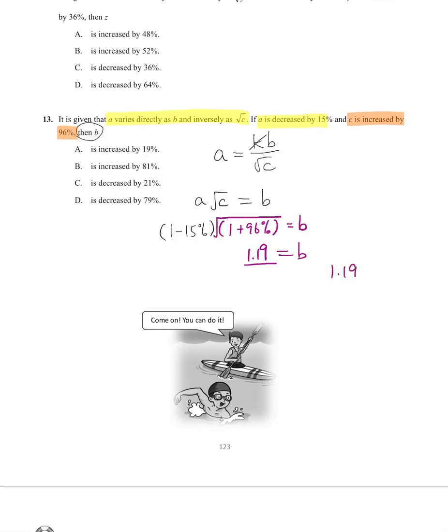And again for the percentage change you minus 1 and times by 100, so you get 19. Since the answer is positive, it's an increase, and it's 19%, so the answer is A. That's all you do for these three types of variation questions.